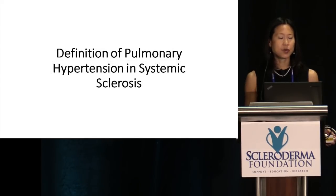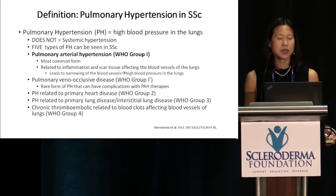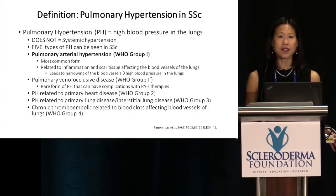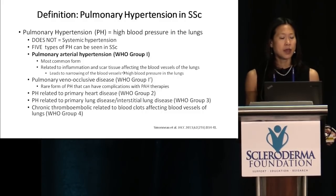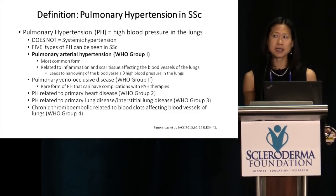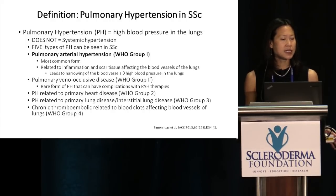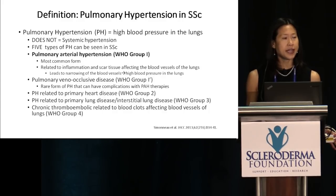Pulmonary hypertension means high blood pressure in the lungs, and I want to emphasize that this does not equal systemic hypertension — high blood pressure in the lungs doesn't mean you have high blood pressure throughout the rest of your body. There are five types of pulmonary hypertension seen in systemic sclerosis. Pulmonary arterial hypertension, or WHO Group 1, is the most common form in scleroderma. It's related to inflammation and scar tissue affecting the blood vessels of the lungs, leading to narrowing and high blood pressure.